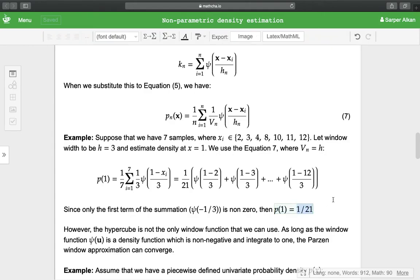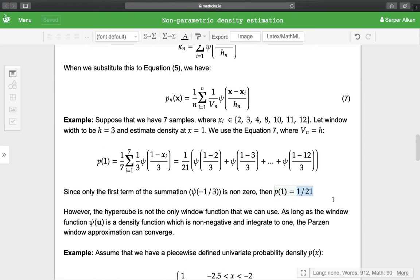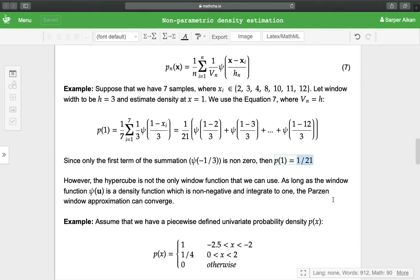So then we can calculate the probability density at 1 is 1/21. We can do this at every point, so that we can have a probability density at every point we like.